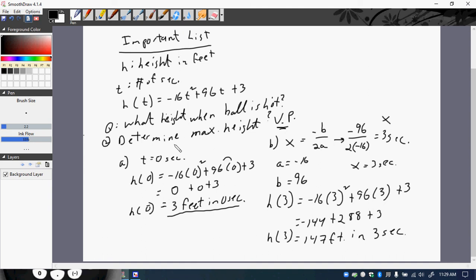And so I've determined the maximum height, which is the vertex point. So my vertex point could be 3 seconds comma 147 feet. And so here's the vertex. This is the highest the ball gets. And after 3 seconds, the ball starts to come down.